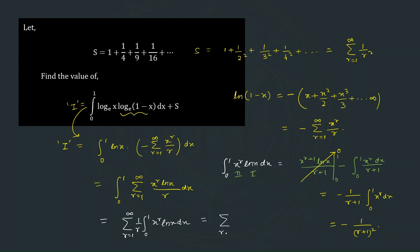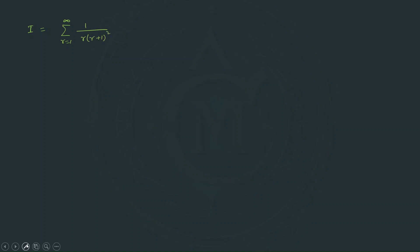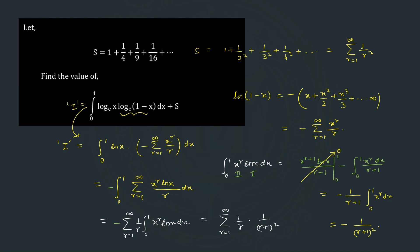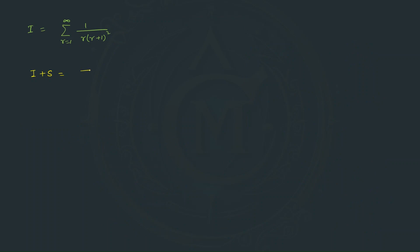Note that I missed a minus sign earlier — the two minus signs cancel to give a positive result. So I equals the summation from r=1 to infinity of 1/[r·(r+1)²]. And I plus S is the summation from r=1 to infinity of 1/[r·(r+1)²] plus the summation from r=1 to infinity of 1/r².